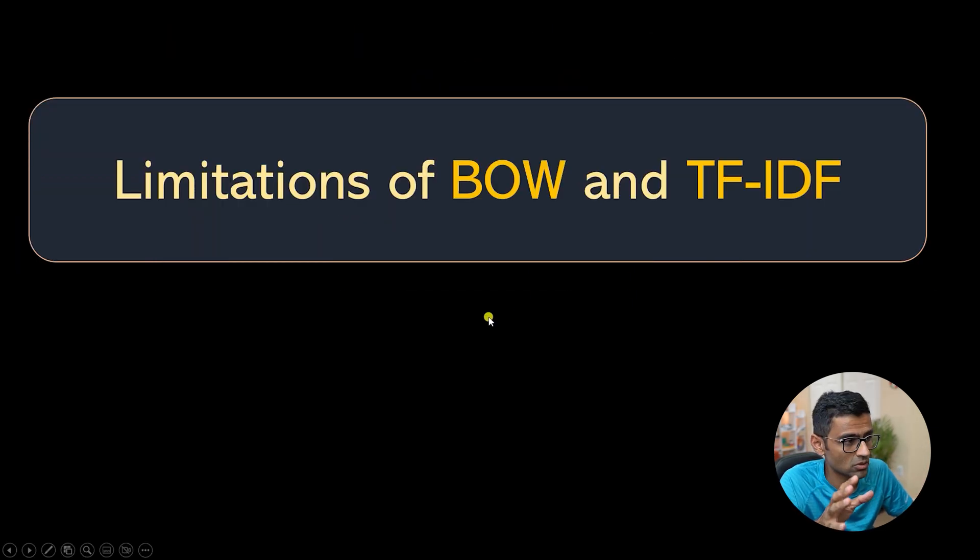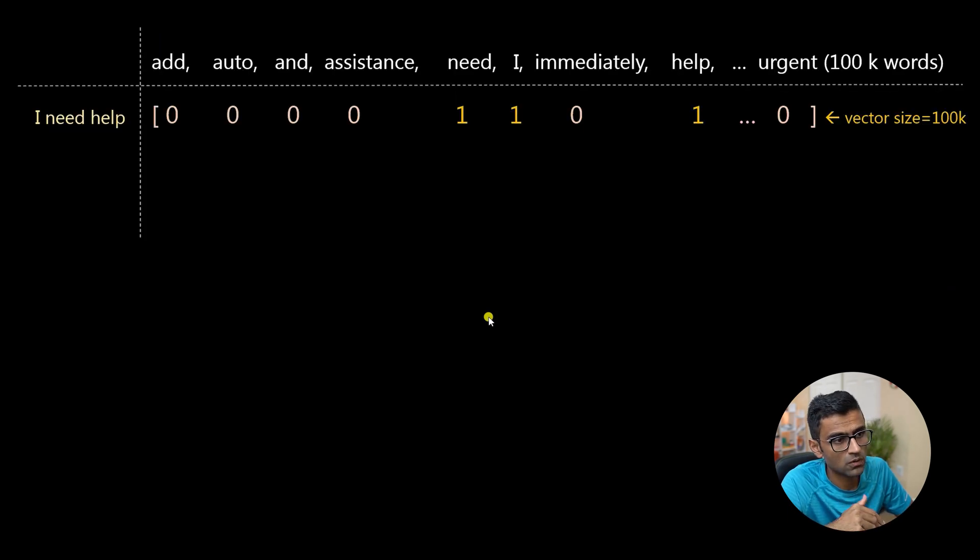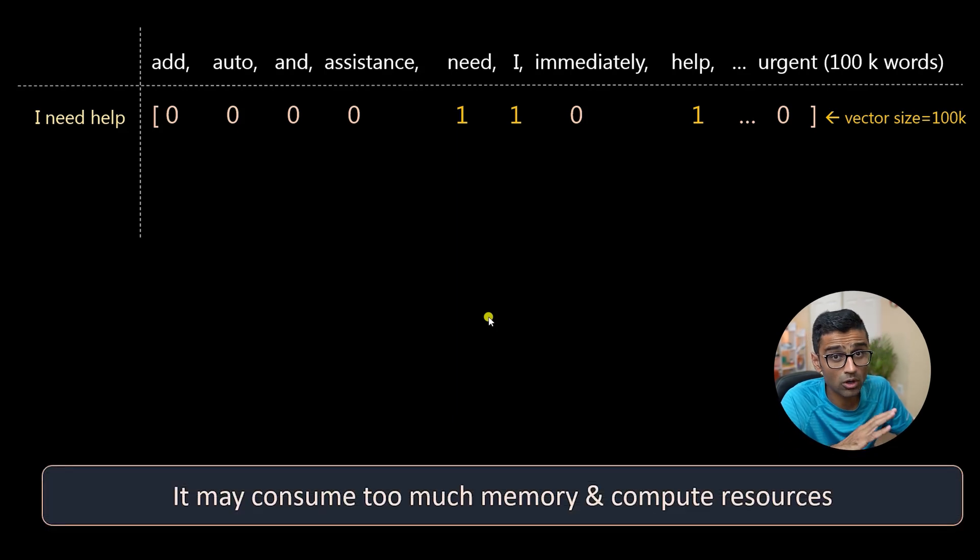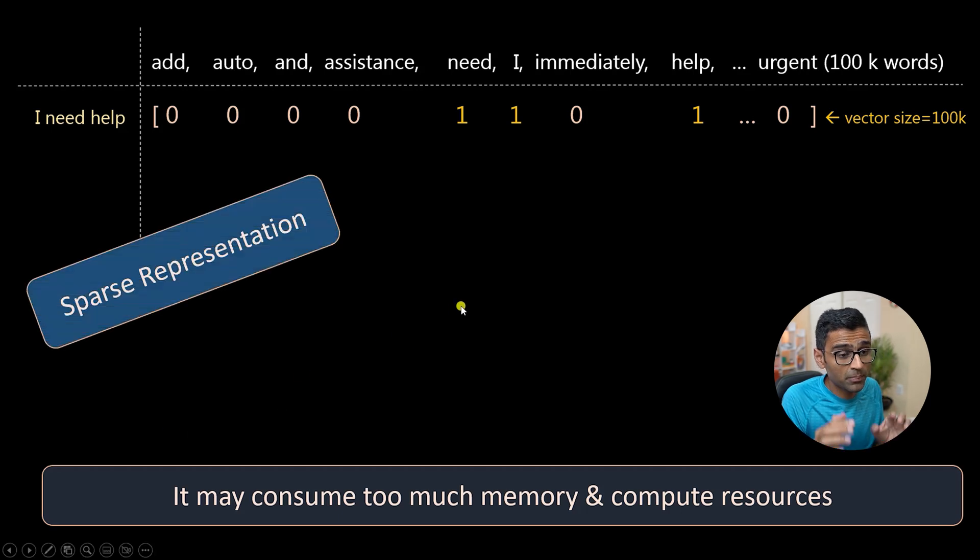There are certain limitations of bag of words and TF-IDF which we have discussed in previous videos. The vector size can really be big for bag of words and TF-IDF models and it may consume a lot of compute resources and memory. Let's say you have vocabulary of 200,000 or 100,000 words - each vector for each of the documents would be 100,000 size and that may be too much. The representation is sparse, meaning in that vector most of the values are zero. So it is not a very efficient representation.